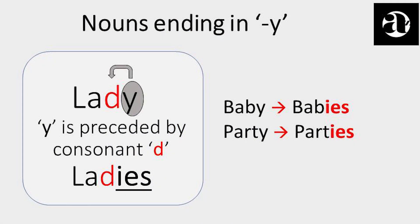If a noun ends in Y and is preceded by a consonant — that is, any letter other than A, E, I, O, U — then we replace Y with IES. For example, let us look at the noun 'lady' (L-A-D-Y). The last letter Y in the word 'lady' is preceded by the consonant D, and hence the plural form is formed by replacing Y with IES. Lady becomes ladies. So also, baby becomes babies, party becomes parties, where Y is replaced by IES.